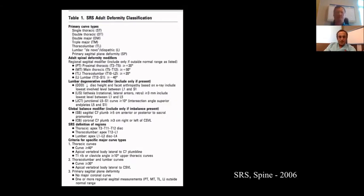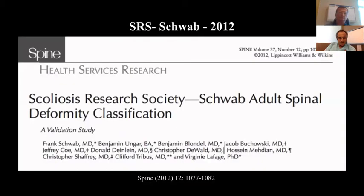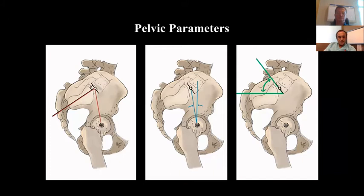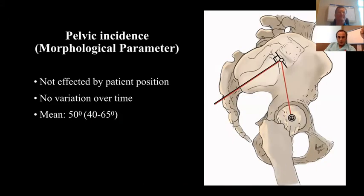In the same year, SRS also described another classification system. At the end, in 2012, the Scoliosis Research Society and Schwab deformity classification was published. On one side we have the coronal curve types, and on the other we have the sagittal modifiers. If you want fewer complications after surgery, you have to bring your patient within these values.